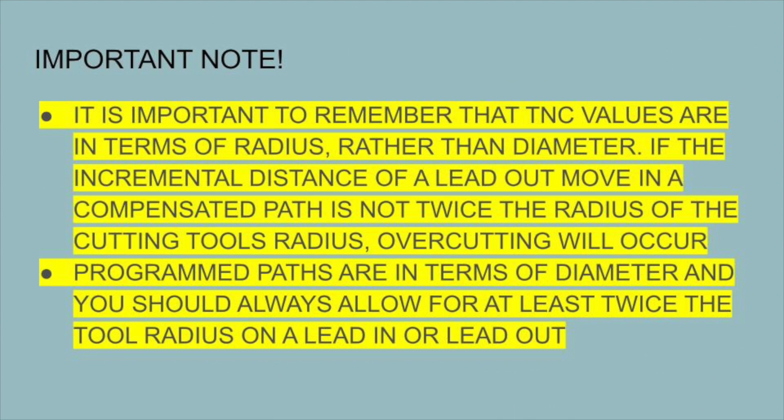It's very important to remember that when you're leading in or leading out, the compensated path has to be at least twice the radius of the cutting tool. The machine will not be able to turn on tool nose compensation if it is not at least this distance. So your G42 when you lead in and your G40 when you lead out needs to be at least double the radius of the cutting tool.